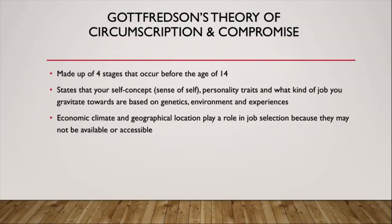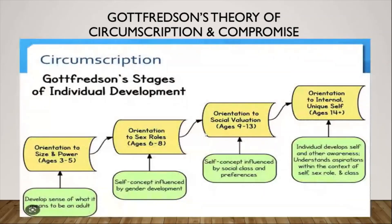The first of the three theories we're going to discuss is Gottfredson's theory of circumscription and compromise. This theory is made up of four stages and it states that self-concept, personality traits, and the jobs you gravitate towards are based on things like genetics, the environment that you're in, and experiences you've had over time. This theory starts at age three and you progress through until age 14 or over.